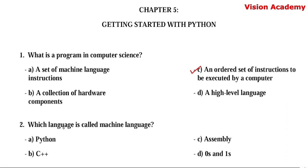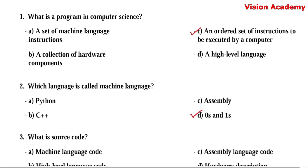Question number 2. Which language is called machine language? Option A: Python. Option B: C++. Option C: assembly. Option D: zeros and ones. Here, option D — zeros and ones — is the right answer.